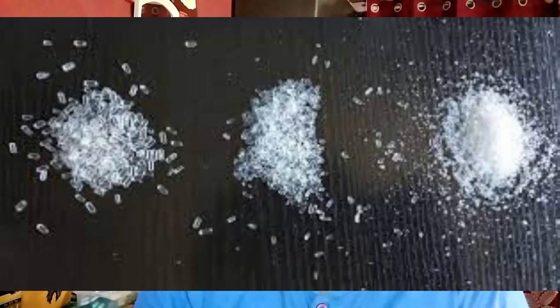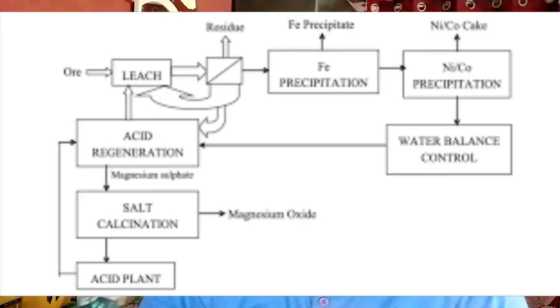We are discussing about chemical business options. Today, we are discussing about magnesium sulfate production. Magnesium sulfate heptahydrate, MgSO4·7H2O — the crystals are obtained by evaporation and may be recrystallized to increase purity. You can make magnesium sulfate heptahydrate in the laboratory by reacting magnesium oxide with dilute sulphuric acid.